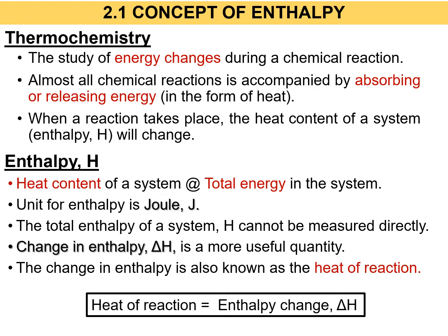When we study thermochemistry, we call the chemical reaction the system. Every chemical reaction has its own heat content, and that is what we name as enthalpy — or another name for it is the total energy in the system. In a chemical reaction, every energy is measured in the form of heat, that's why it is called heat content. So total energy is the same as heat content.